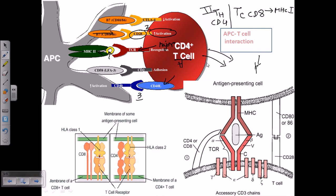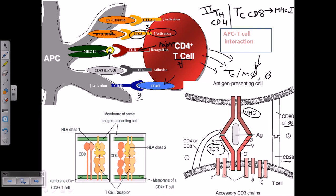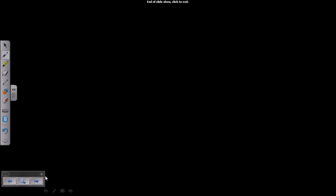The combined interactions of TCR with MHC, B7 with CD28, and CD40 with CD40 ligand complete all the signaling cascades, and the T helper cell is finally fully activated. It then brings upon other cell types like cytotoxic T cells, macrophages, and B cells. In the case of MHC class 1 with CD8, the interaction is similar but distinct from MHC class 2 with CD4. MHC molecules are very important because they call upon other immune cells to the site of danger.